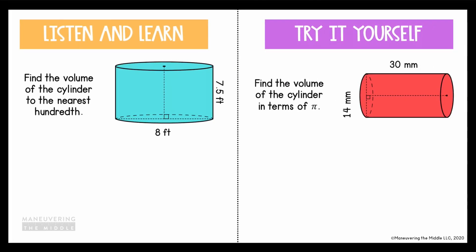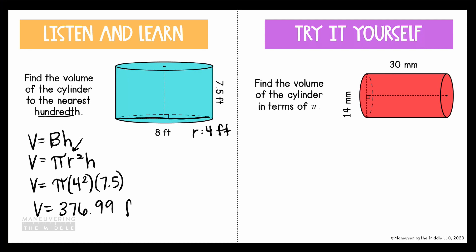A couple more. So find the volume of this cylinder to the nearest hundredth. So here's our formula: area of the base times the height. The area of the base is pi r squared. You always wanna look carefully at your cylinder because this time they gave us the diameter, which is 8 feet, but in our formula we need the radius. So if the diameter is 8, the radius is half of 8, which would be 4 feet. So now we can substitute pi times 4 squared times the height of 7.5. Multiply through and the volume is 376.99 and that'll be feet cubed.